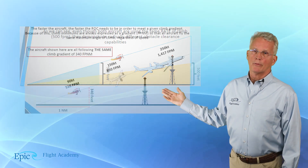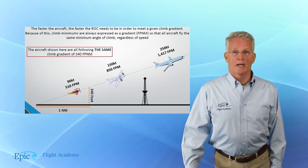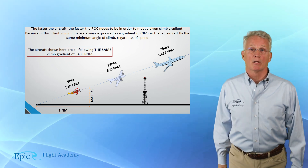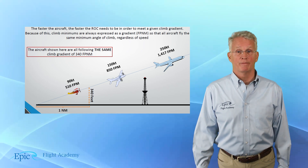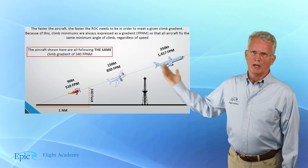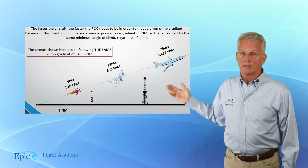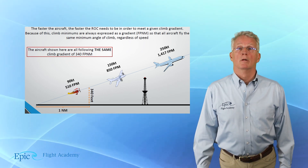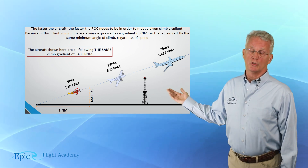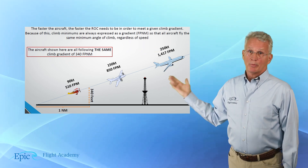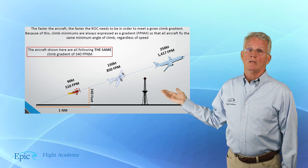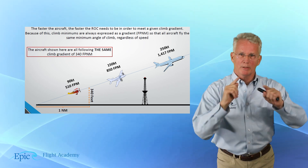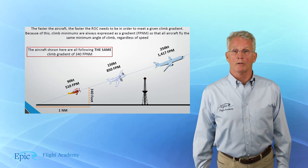Take a look at our third diagram. Our high-drag slow-speed bi-wing airplane at 90 knots is on that climb gradient at 510 feet per minute. A slightly faster turboprop twin climbing out at 150 knots needs at least 850 feet per minute climb rate. And a high-speed twin-engine jet climbing out at 250 knots needs over 1,400 feet per minute to maintain that climb gradient. It is the pilot's responsibility to determine if they are capable of meeting that required climb gradient.